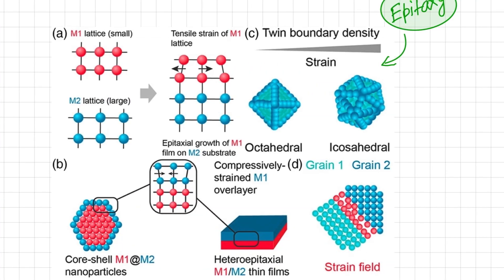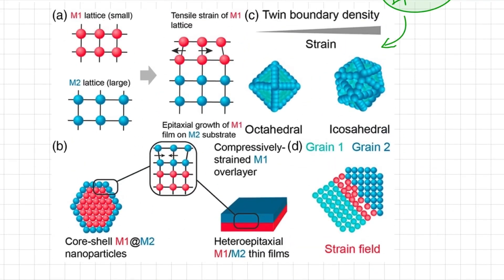The next top-down approach is called epitaxy. The word epitaxy is derived from two Greek words: 'epi' meaning 'upon' and 'taxis' meaning 'arrangement.' Epitaxy refers to the growth of a crystalline layer on a substrate such that the atoms in the layer mimic the atomic arrangement of the substrate, resulting in a high-quality interface between the layer and the substrate.